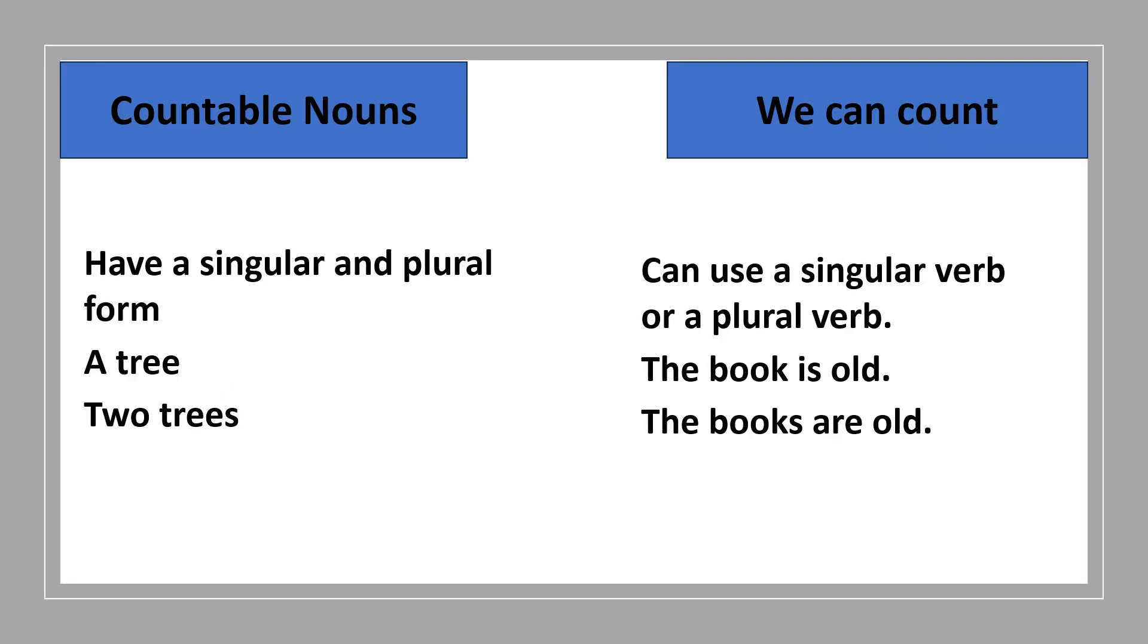Countable nouns have a singular and plural form. For example, one tree, two trees, three trees. We can count the countable nouns. It can use a singular verb or a plural verb. For example, the book is old, the books are old.